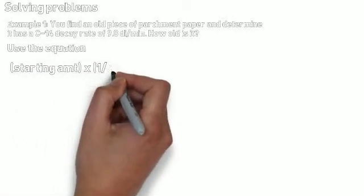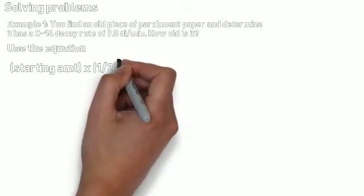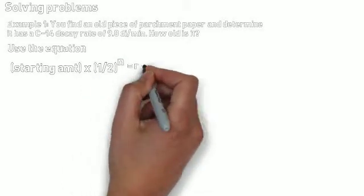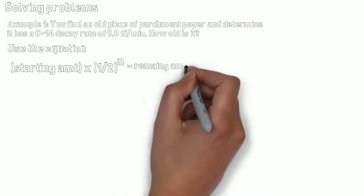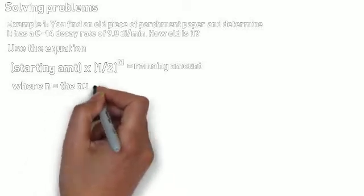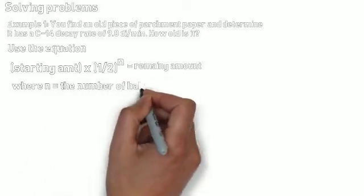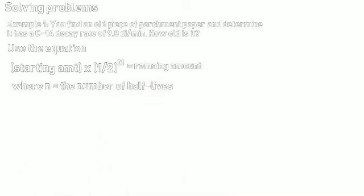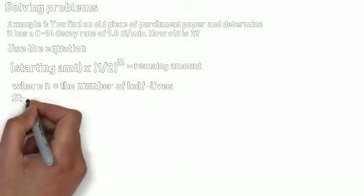we used the equation starting material equals 1/2 to the n power, where n is the number of half-lives, and 1/2 to the n power equals the remaining material. And we're going to use the same equation here. So, using this equation, where n is the number of half-lives,